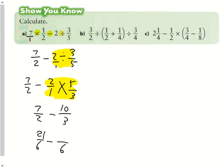The equivalent fraction is 21 sixths, take away 20 sixths when we make our equivalent fractions. And when we subtract 21 sixths, take away 20 sixths, our final answer will be 1 sixth.